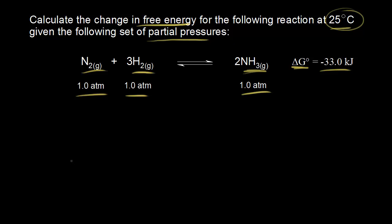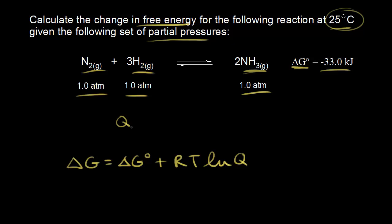We're trying to find delta G, so let's write down our equation: delta G is equal to delta G zero plus RT times the natural log of Q. We need to find Q, our reaction quotient. It has the same form as the equilibrium constant — products over reactants, concentrations raised to the power of their coefficients. But here we're dealing with partial pressures instead of concentrations, so I'm going to write Q sub P to remind ourselves we're working with partial pressures.